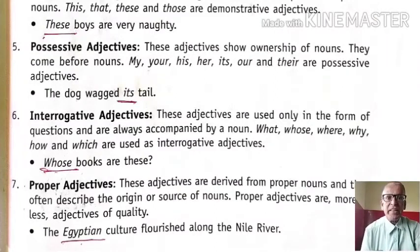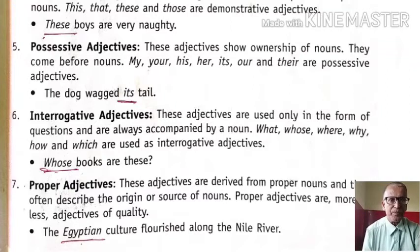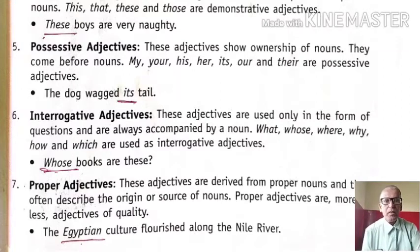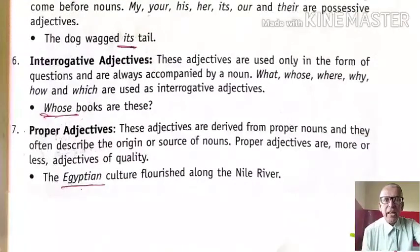Six, interrogative adjectives. These adjectives are used only in the form of questions and are always accompanied by a noun. What, whose, where, why, how, which are used as interrogative adjectives. So whose is the word used as an interrogative adjective.